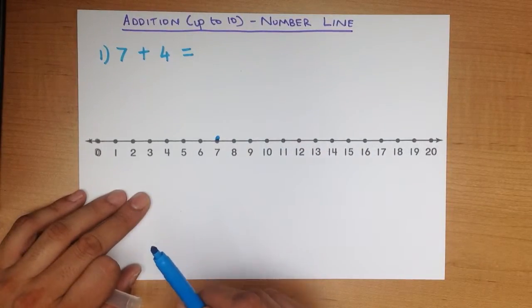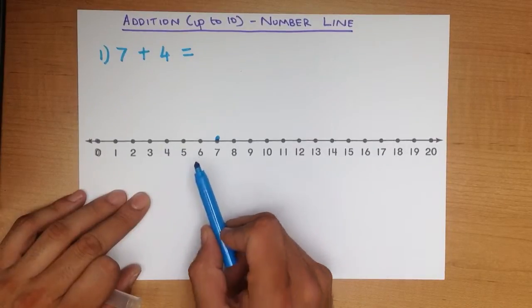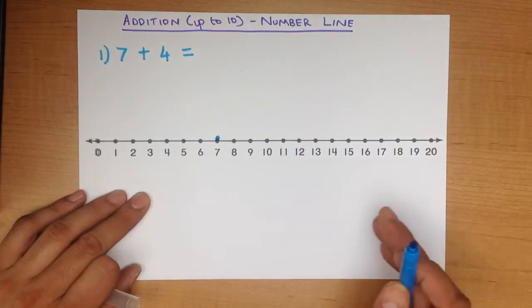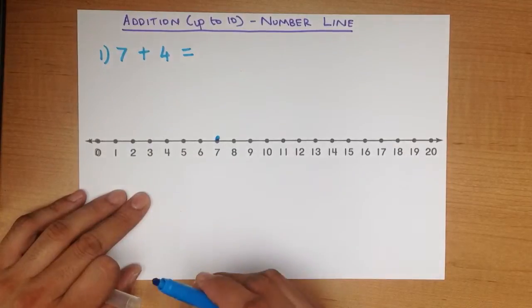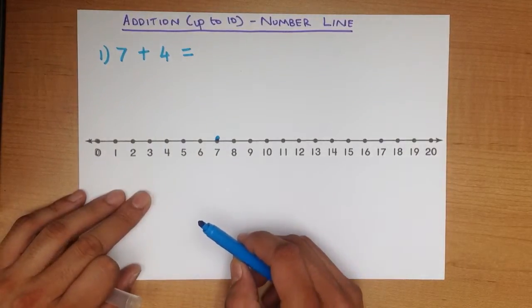If we were minusing or subtracting, we would go backwards. So, the number line we can use for both addition and subtraction.